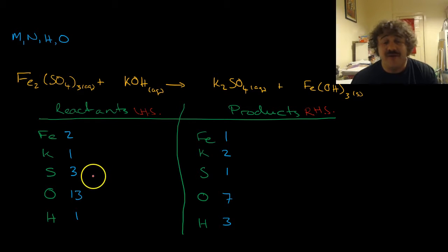And our product side, we've only got one iron, two potassiums, one sulfur, seven oxygens. But we've got, the only one we actually have more, there's more potassium as well, and we've got more hydrogens at three.